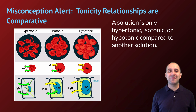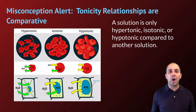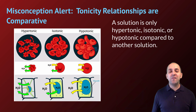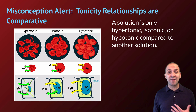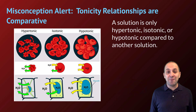One common misconception about tonicity is that tonicity relationships are comparative. A solution can't be hypertonic, isotonic, or hypotonic unless you are comparing it to another solution. We've been comparing different solutions to the cytoplasm inside cells to look at their effects, but you simply cannot describe a solution as hypertonic, hypotonic, or isotonic without specifying the solution you're comparing it to. This is a fine point, but definitely a mistake that students make all the time.